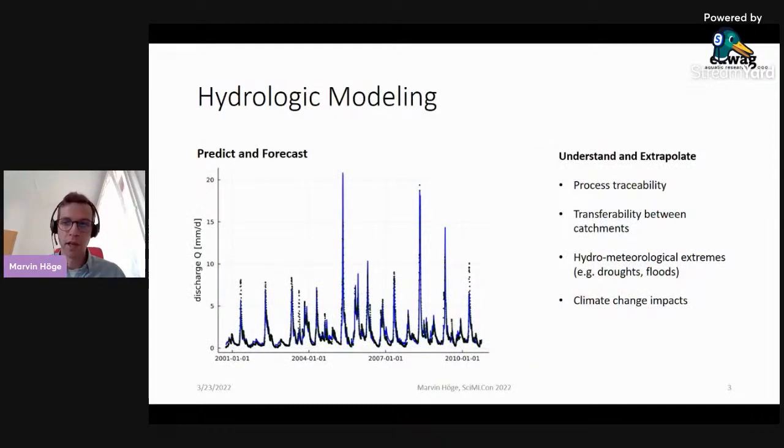Therefore, one major objective in hydrologic modeling is to predict and forecast stream flow over time. As you can see in this example discharge time series for some random catchment, the blue model prediction matches the dots that represent discharge observations pretty well. The other major objective is to understand the processes within the system and to extrapolate them. That means to learn traceable relations or to transfer knowledge from one catchment to another. It also means being able to estimate the effects of hydrometeorological extremes like droughts or floods, and in the broader context, as we've also heard before, to assess climate change impacts.